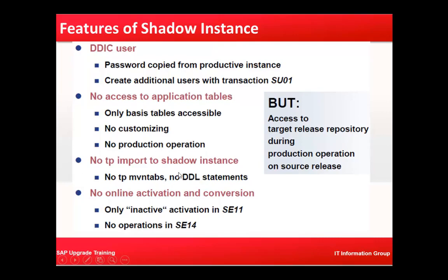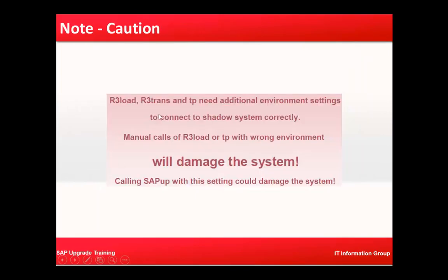No TP MNV_TABS, no DDL statements, and no online activation and conversion — only inactive objects are available in AC11, and no operations in AC14. However, access to the target release repository is available during production operation on the source system. Importantly, if you are using binaries like R3LOAD, R3TRANS, or TP, make sure you have the correct environment variables set, because mixing environment variables between the production system and the shadow system can cause damage.